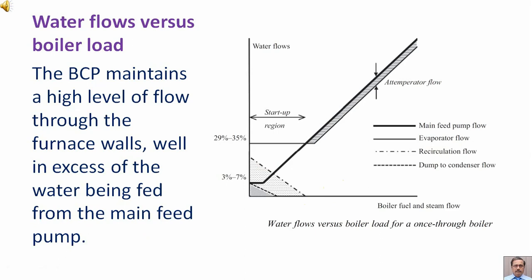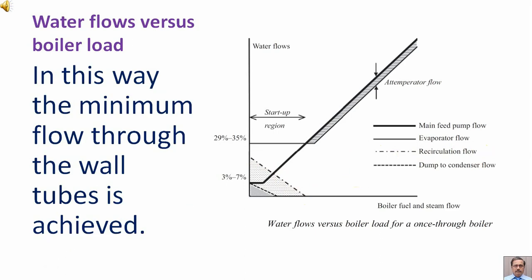The boiler circulation pump maintains a high level of flow through the furnace tubes, well in excess of the water being fed from the main feed pump. In this way, the minimum flow through the furnace tubes is achieved.